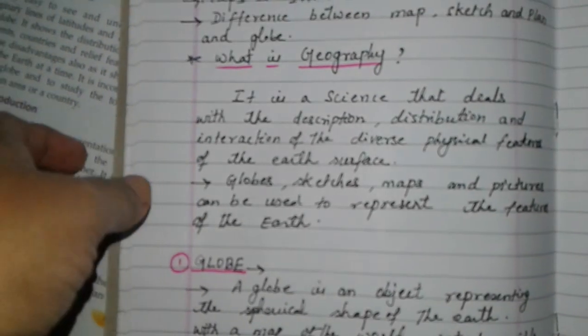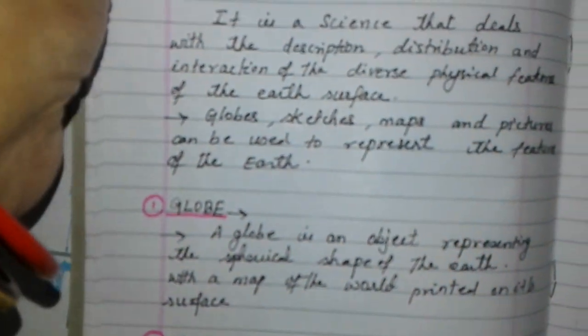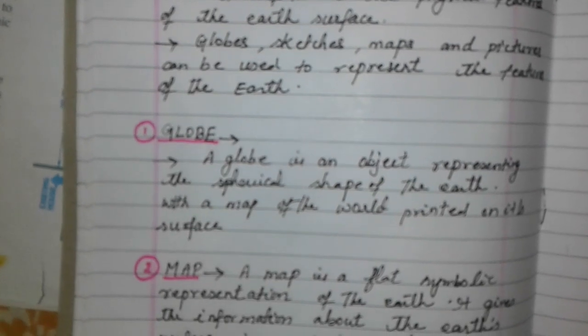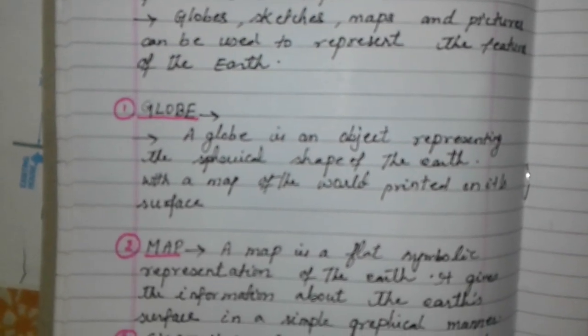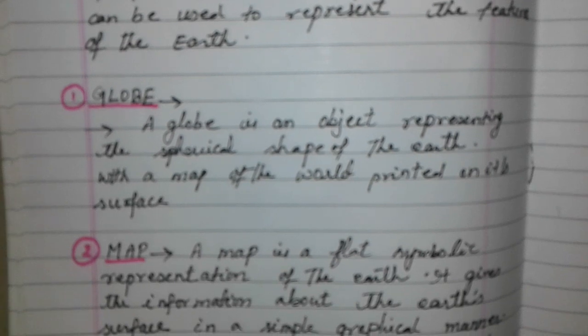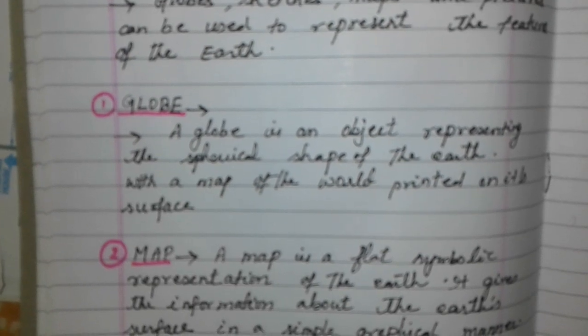Now we will discuss what is a globe. See here, this is the globe — it is a round shaped structure fit in a stand. A globe is an object representing the spherical shape of the earth with a map of the world printed on its surface. You can see here the map is pasted on the globe.